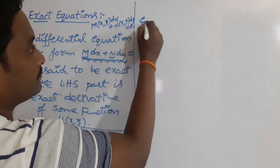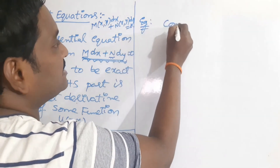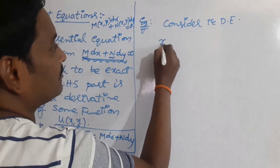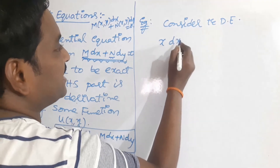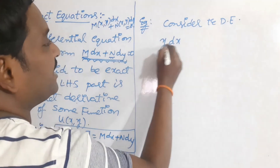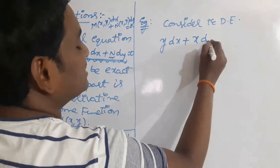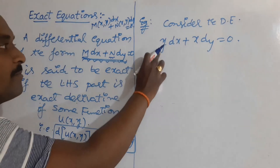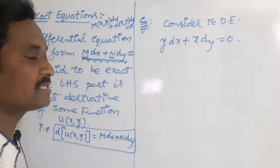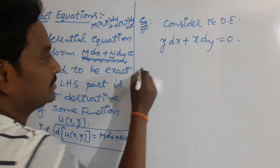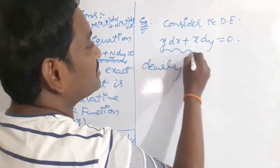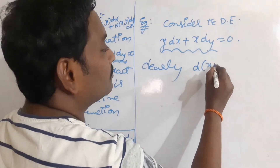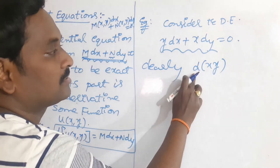Let's see an example. Consider the differential equation y dx plus x dy is equal to 0. Clearly it is in the form of M dx plus N dy = 0. And the left-hand side part, y dx plus x dy, is the derivative of the term xy.